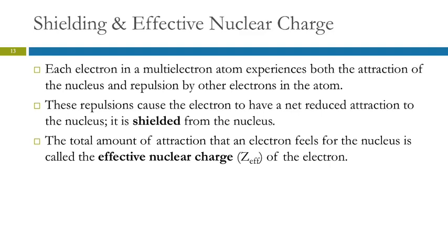In a multi-electron atom — which is everything but hydrogen — we have attraction between the nucleus and the electrons, and repulsion between the electrons because they're all negative. Those repulsions can cause an electron to have a reduced attraction to the nucleus; other electrons can shield the nucleus so you can't benefit from all of its positive charge. The amount of attraction an electron actually feels is called the effective nuclear charge. Z is the atomic number — the number of protons — but the effective nuclear charge accounts for the other electrons getting in the way.